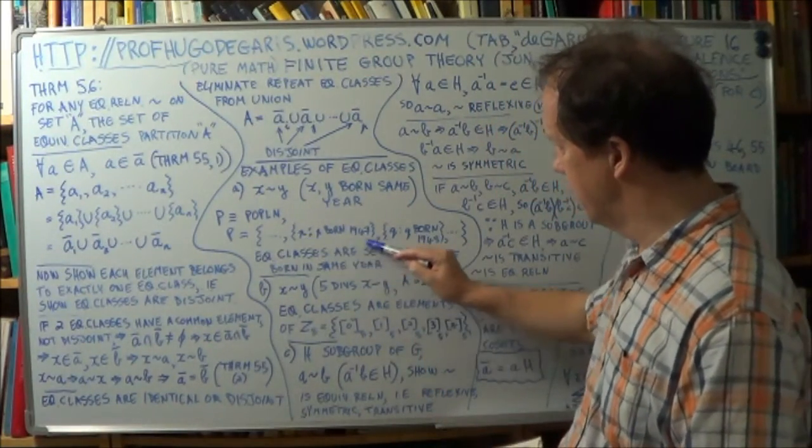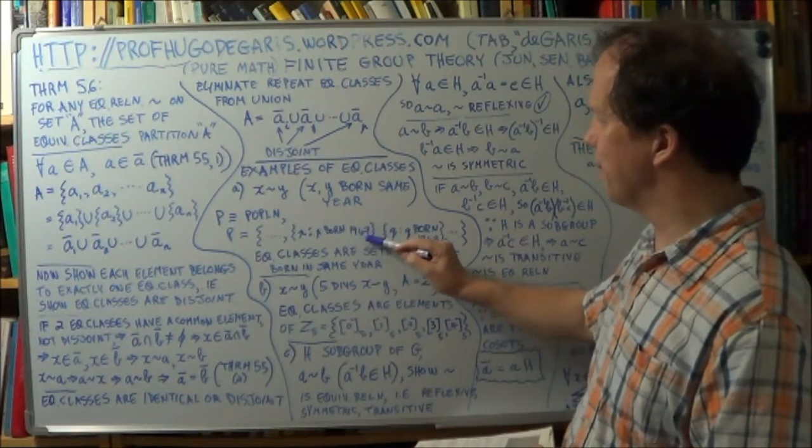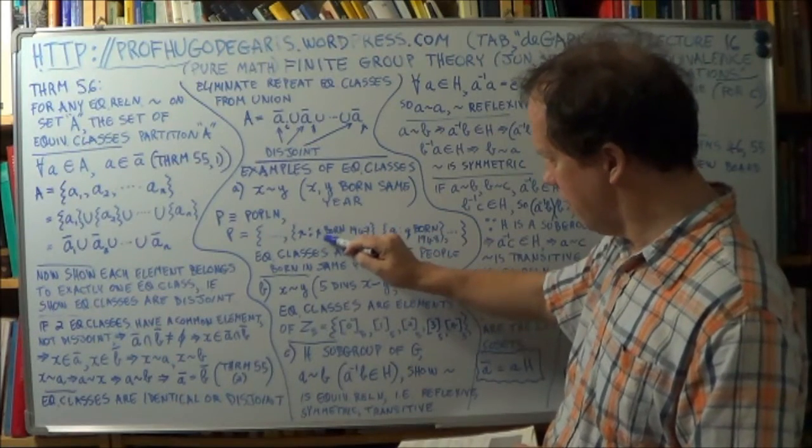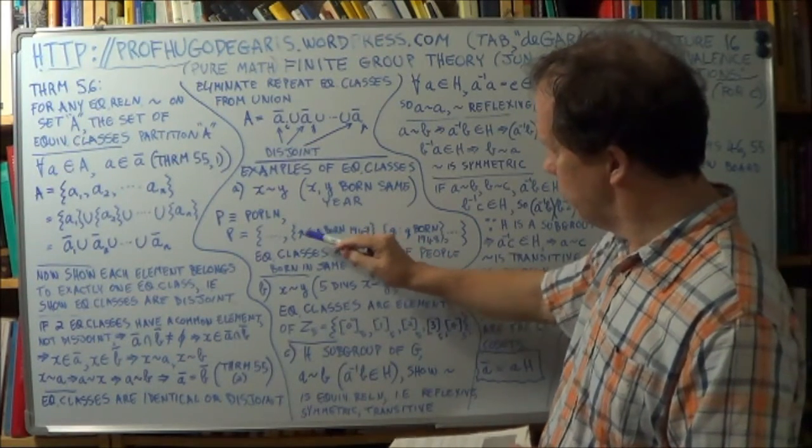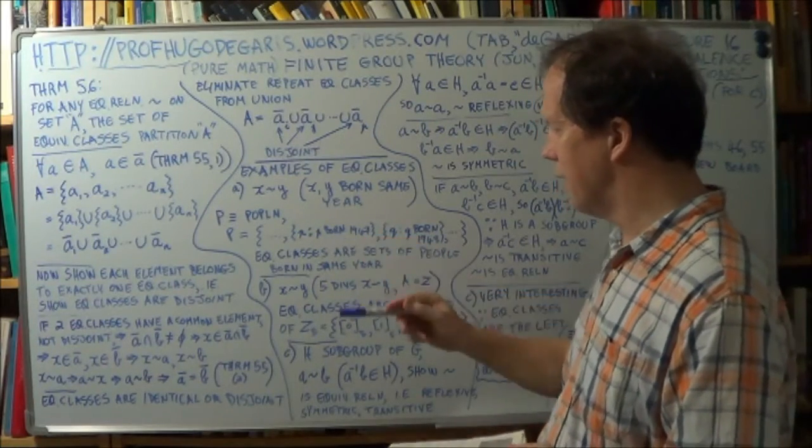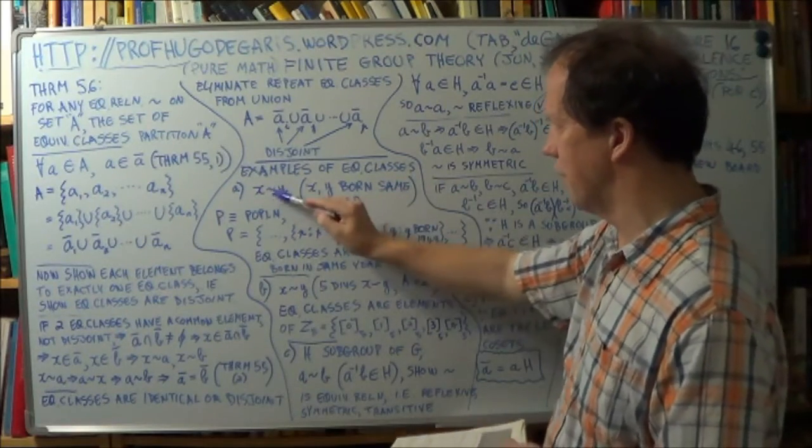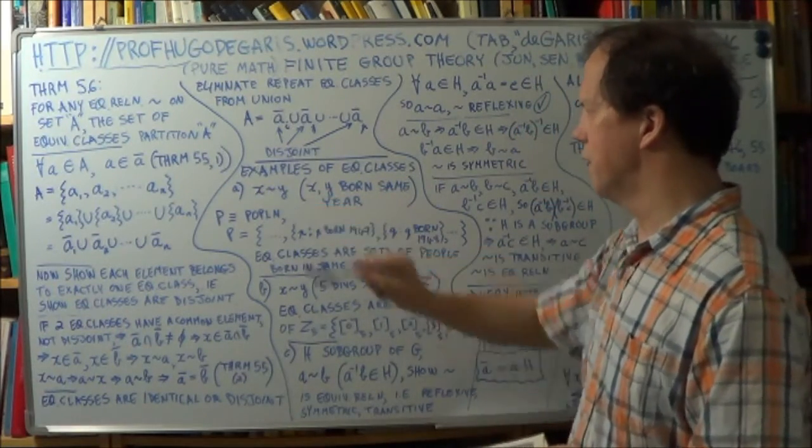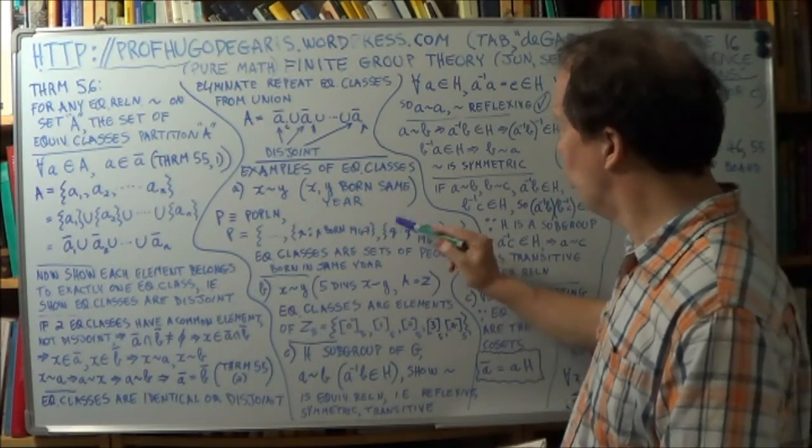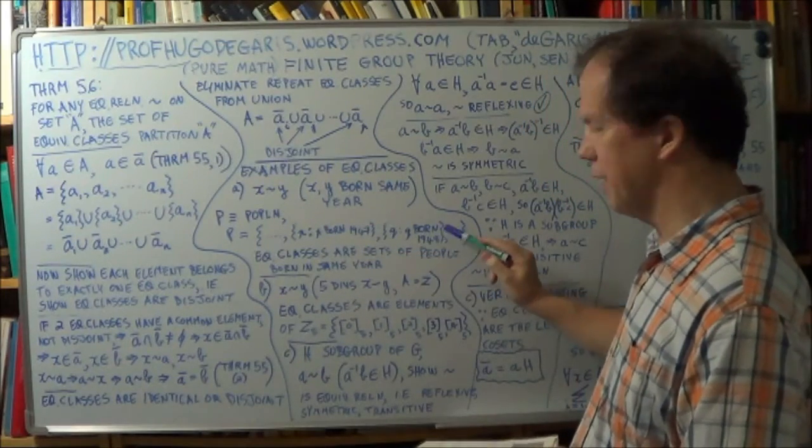they are the subpopulations of all of whose members are born in the same year. So this subset here could be all those people born in 1947. That would be one equivalence class because every member of that subset were born in 1947. So any two members of this are equivalent because they're born in the same year. They satisfy that equivalence relation. And another subset, a different equivalence class,